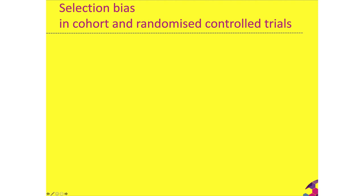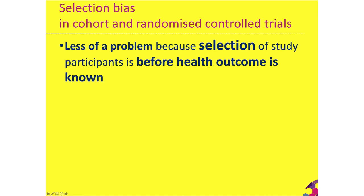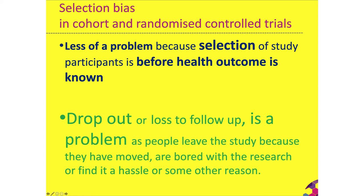In cohort and randomised controlled trials, selection bias is less of a problem because we select participants before the health outcome is known — unlike case-control studies where it is a big problem. In cohort and randomised controlled trials the key selection bias issue is dropout or loss to follow-up: as people leave the study because they've moved, get bored, or find it a hassle, we need to understand why they've dropped out and what impact that has had on the representativeness and diversity of remaining participants.